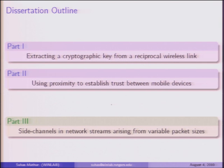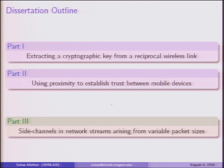The outline of this dissertation is broken up into three portions. The first two portions are somewhat related in that they both deal with confidentiality. The third part has to do with traffic privacy in network streams. I'll begin with an introduction, then talk about these three parts one after the other, and end with future directions pertaining to things I would have liked to do but could not, and where things can go afterwards.